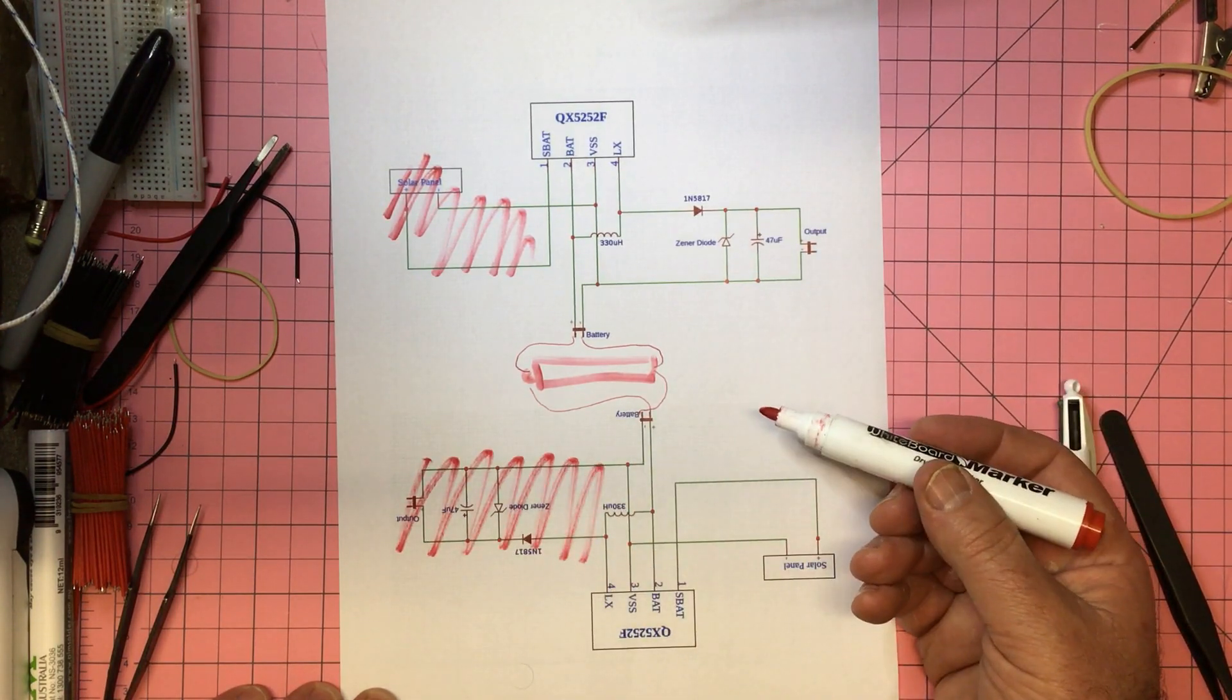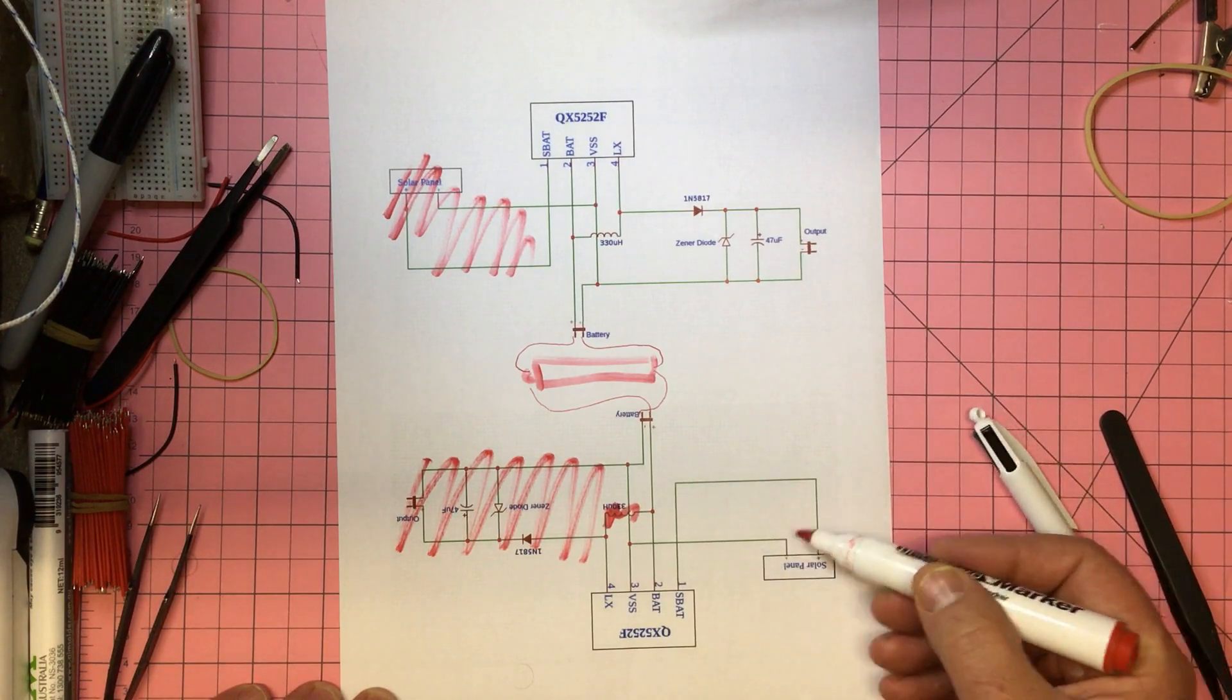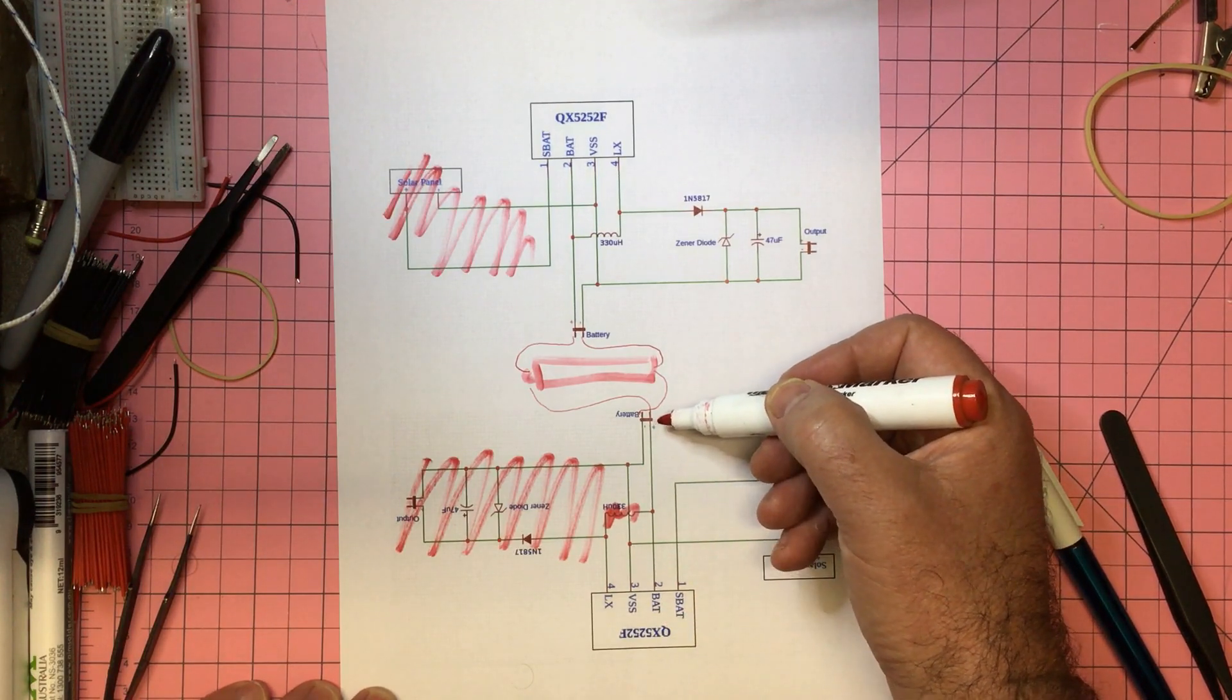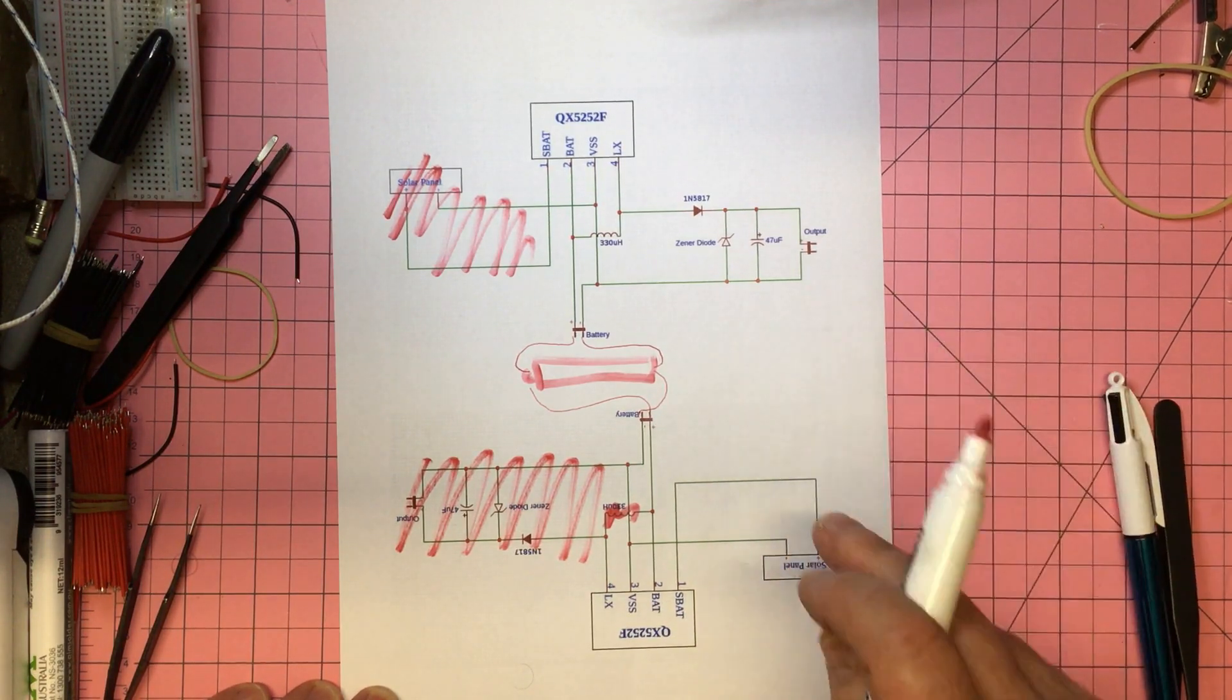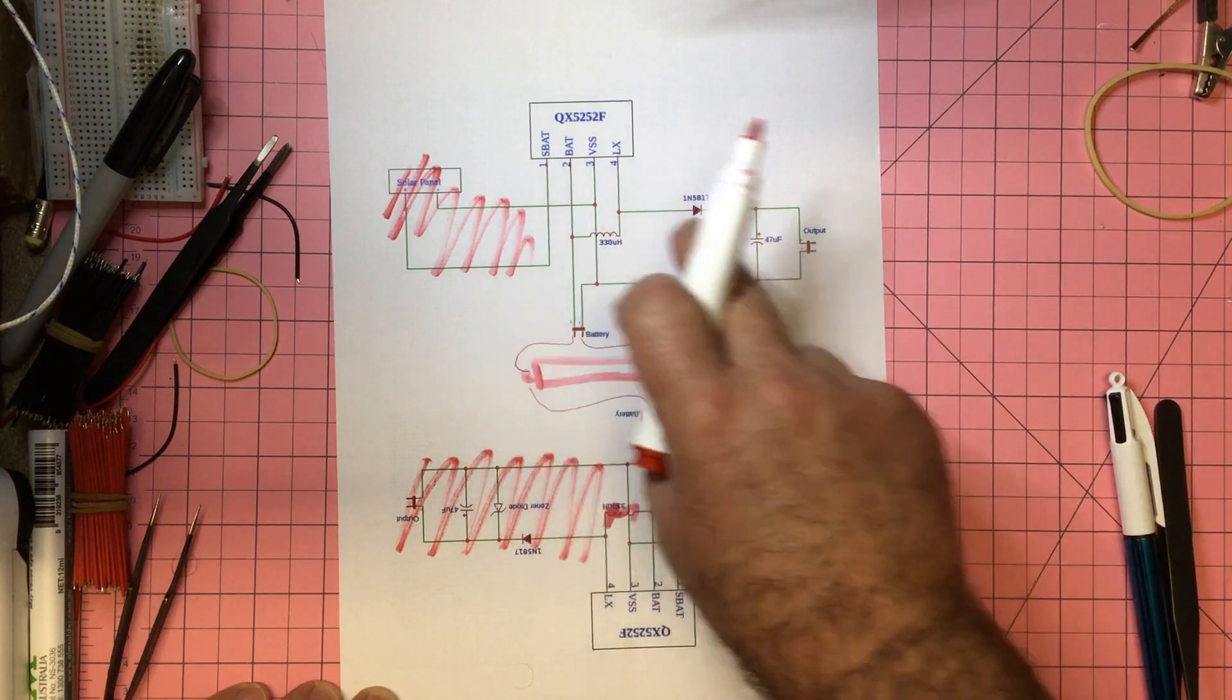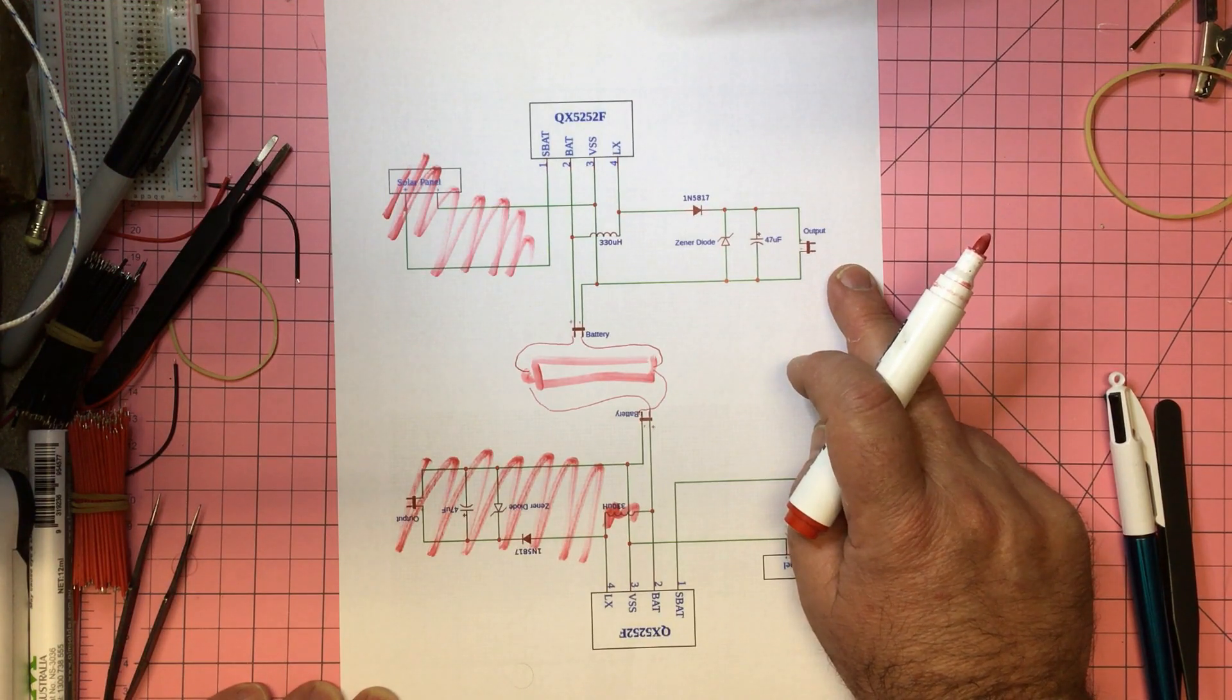Then on this one here what we do is we basically do the reverse. So we get rid of this part of the circuit and you don't need your inductor either. What you've got here is your solar panel which during the day will feed in through the QX5252 to charge the battery. So daytime, this is doing the work to charge the battery but it's also discharging and still providing the microcontroller with power.